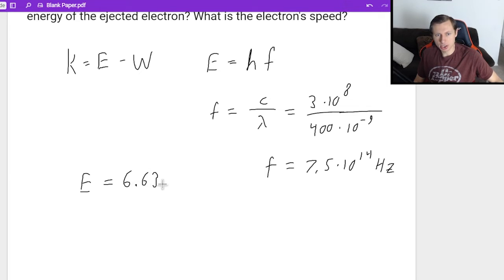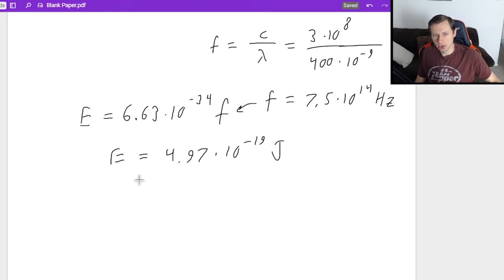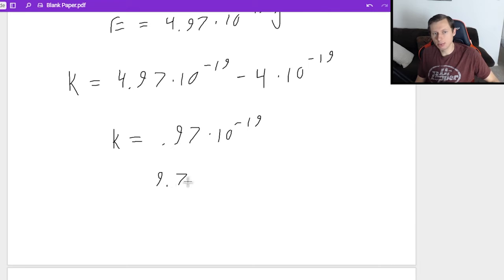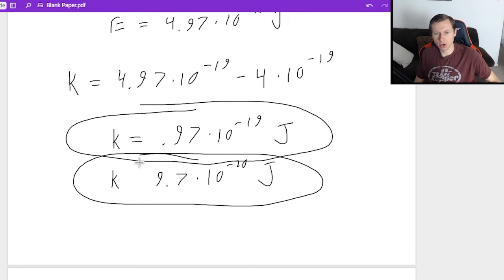Energy equals h, which is 6.63 times 10 to the minus 34th, times the frequency, which we just said is that number. So I'll plug that in my calculator now, and I will get an energy e equals 4.97 times 10 to the minus 19th joules. And once I have that energy, now all I need to do is say the kinetic energy is equal to the energy, which we just said 4.97 times 10 to the negative 19th, minus the work function, which I gave at the beginning, 4 times 10 to the minus 19th. So this is just going to be k equals 0.97 times 10 to the minus 19th, or you can also write this as 9.7 times 10 to the minus 20. That's our kinetic energy in joules.